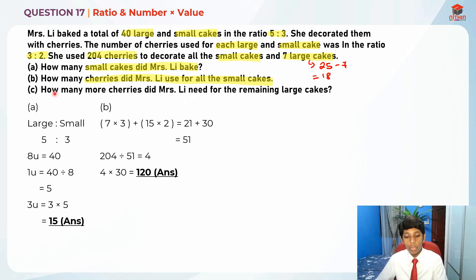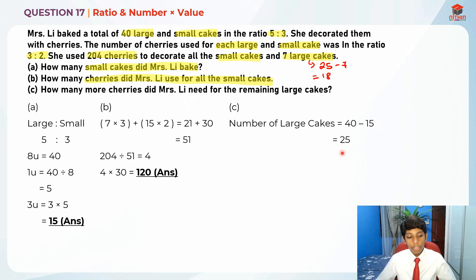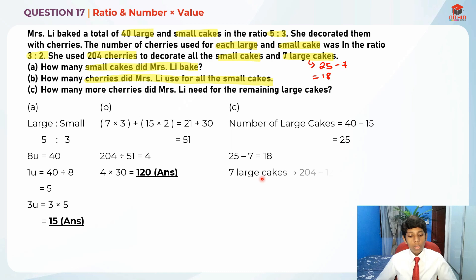For Part C, we need to find how many more cherries Mrs. Lee needed for the remaining large cakes. There are 18 large cakes remaining. First, we find the total number of large cakes: 40 minus 15 equals 25. Then the remaining large cakes are 25 minus 7 = 18.